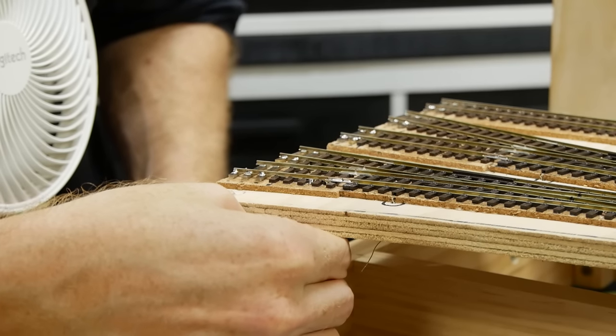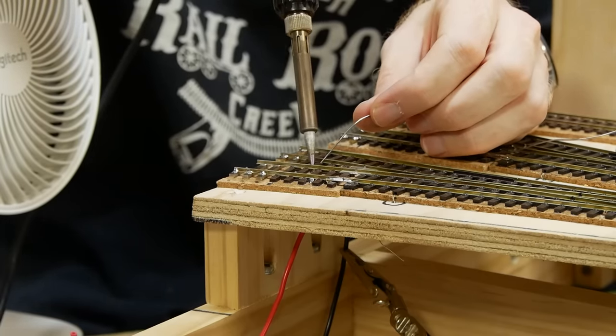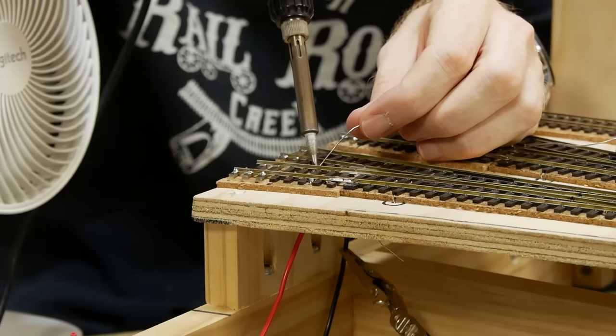Once done I test the join by gently pulling on the feeder. If it's a good join it should hold strong even when pulling down on the wire. This is repeated for every section of track.